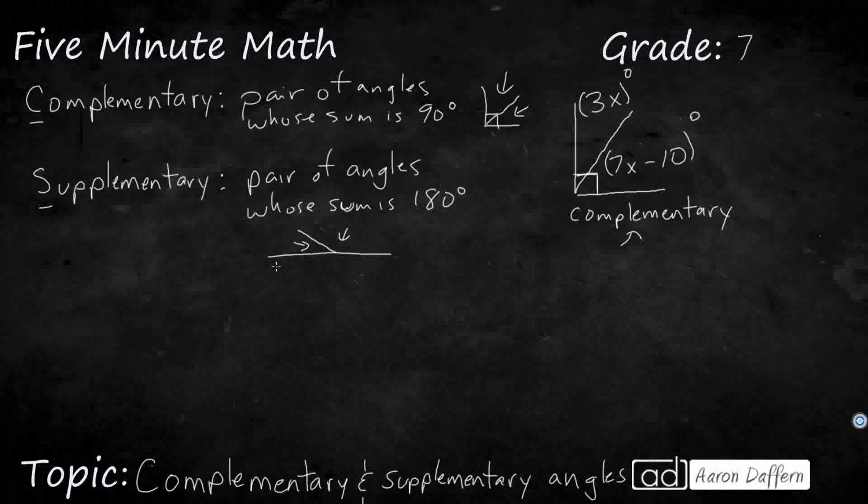Well, if we know that these two angles are complementary, we know that they equal 90 degrees. So I'll call this angle one, I'll call it angle two. So angle one plus angle two equals 90 degrees, and I know that because that's the definition of complementary angles.